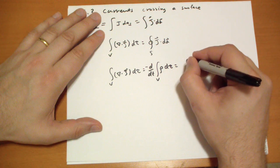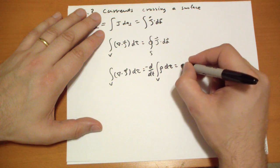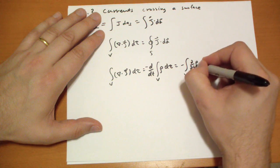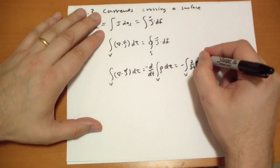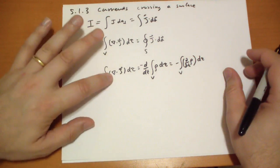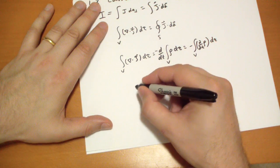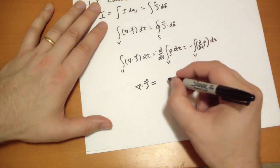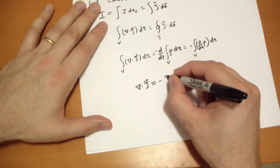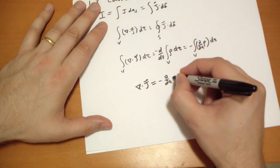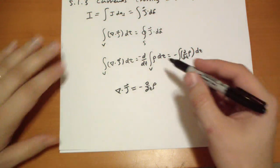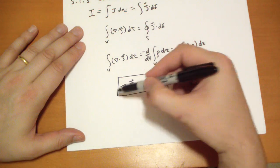Which we can bring that d by dt in. So we get minus the integral of V of the partial derivative with respect to t of the charge density, d tau. And then picking these out from the middle, we get that the divergence of the volume current is equal to negative of the change of charge density at that point.